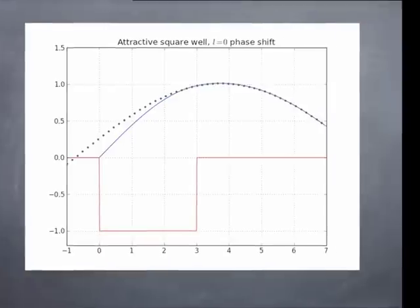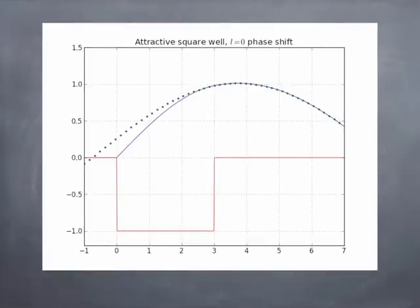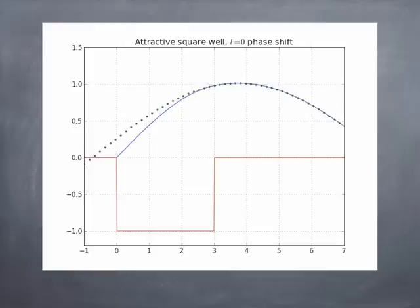Inside the well, the kinetic energy is a little higher, which means the wavelength is a little shorter. When you match the amplitude and slope of the wave function at the boundary, you find that the outside wave function looks like a sine plus a cosine, but shifted in phase relative to what it would have been without the potential. If there were no potential, the wave function would go to 0 at the origin with a fixed wavelength throughout. Because of the potential well, the wavelength got shorter inside, so the phase shifted. We call that phase shift delta, and in space it's delta divided by k.